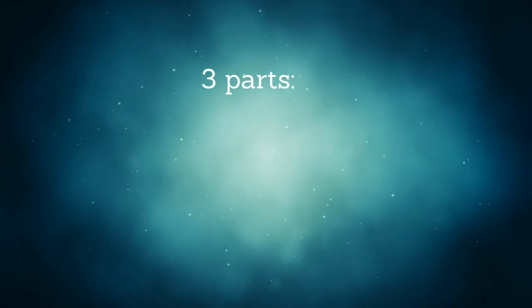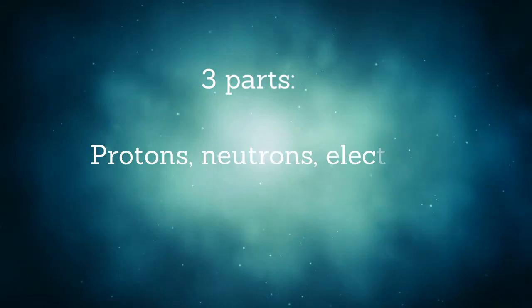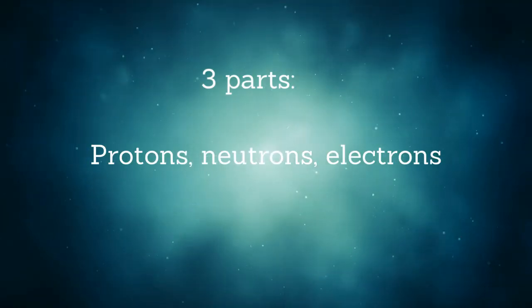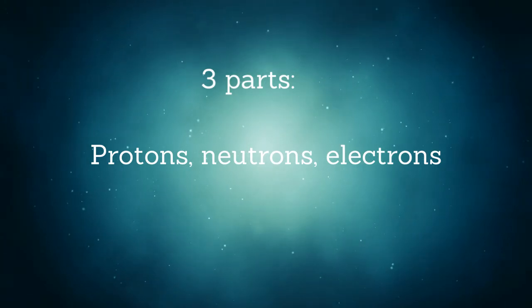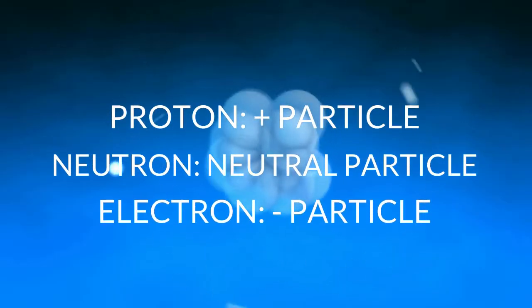Atoms are typically made up of three main parts: protons, neutrons, and electrons. Protons are positively charged particles. Neutrons are neutral, uncharged particles, and electrons are negatively charged particles.